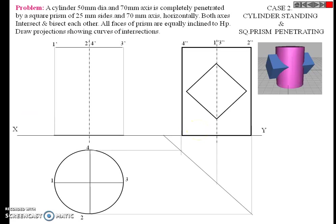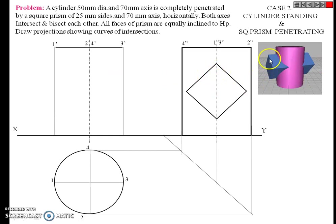The first step was to draw the top view, front view, and side view of the first solid. The next step is to take the second solid and draw its side view.